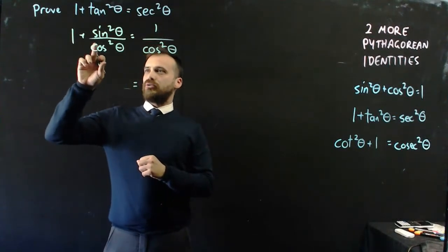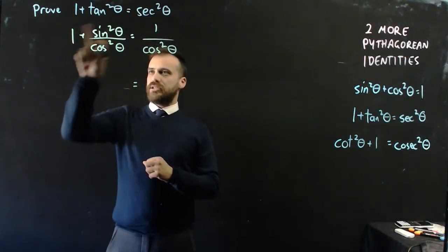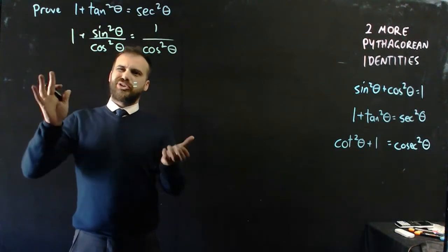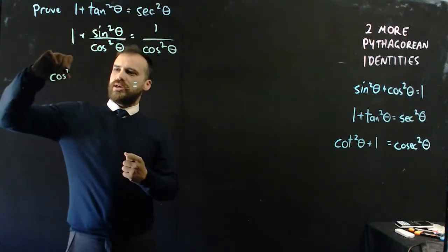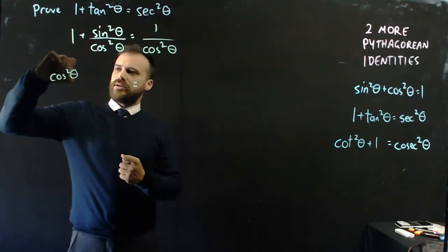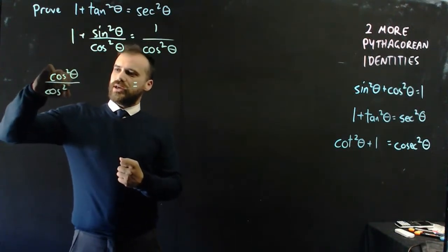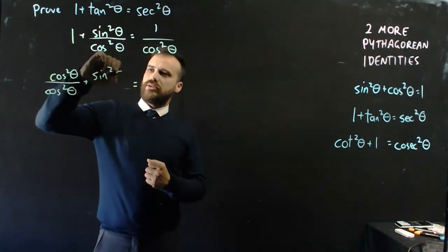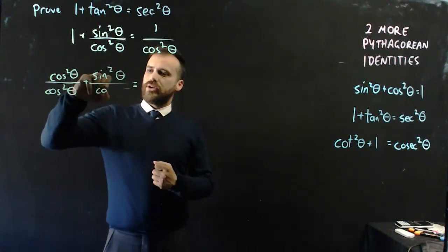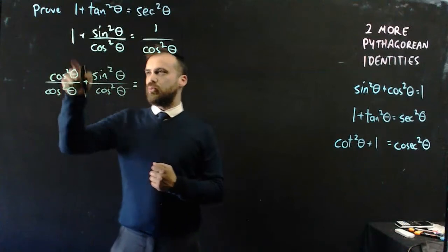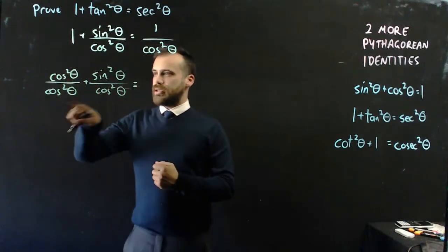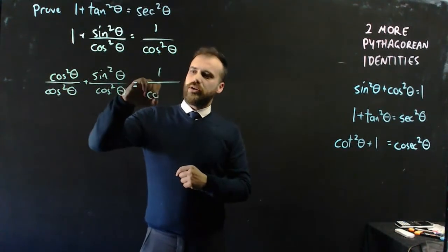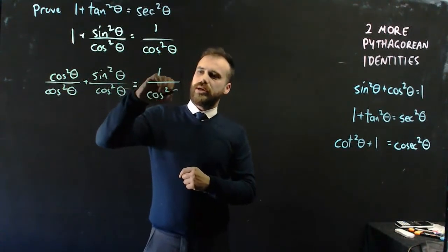I can rewrite this whole thing as cos squared theta over cos squared theta plus sine squared theta over cos squared theta, because 1 is just something over something, and that's going to be equal to 1 over cos squared theta.